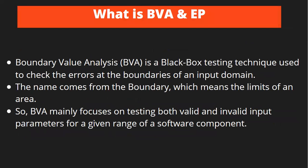What is BVA and EP? BVA is Boundary Value Analysis — a black box testing technique used to check errors at the boundaries of an input domain. BVA focuses on both valid and invalid input parameters for a given range. For example, if a text box supports 1 to 10 characters, you would test at -1, 0, 1 and also at 9, 10, 11. That is boundary value analysis.